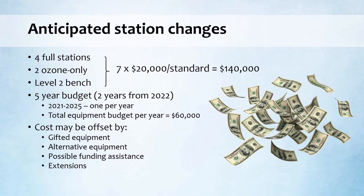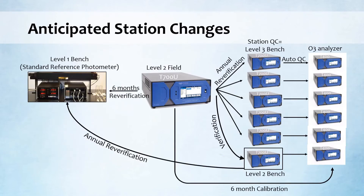Here's what we're thinking across our stations. We replace all of our QC instruments with the T700U. Then at our main headquarters — our cleanest station — we take that T700U and send it back for annual re-verification against the level one bench, which would make it a level two bench. We can use that for the initial verification of the rest of the station T700Us. Then everything else would be pretty much the same — our field transfer standard gets sent back on a six-month verification, used to perform the six-month calibration of the ozone analyzer, and then the annual re-verification of the station QC instruments.